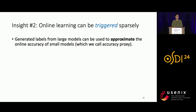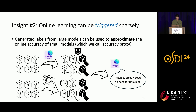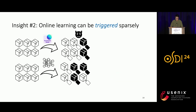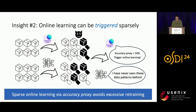The second insight is that online learning can be triggered sparsely. Generated labels from large models can be used to approximate the online accuracy of small models — we call this the accuracy proxy. If the generated labels from large models mostly match the small model's classification results, the accuracy proxy is high, meaning we don't need retraining because traffic is relatively static and the small model is performing well, saving system resources and avoiding overfitting. However, if the accuracy proxy is low, indicating the small model has derailed significantly from the large one — likely due to new types of attacks or new network applications — then we trigger online training. In short, sparse online learning via accuracy proxy avoids unnecessary retraining and saves system resources.